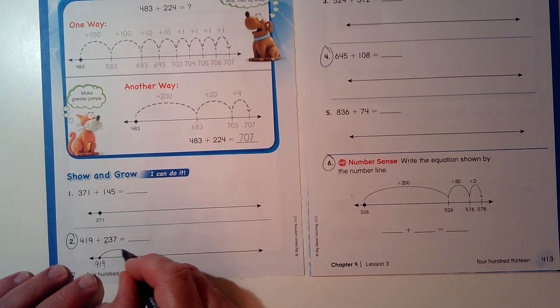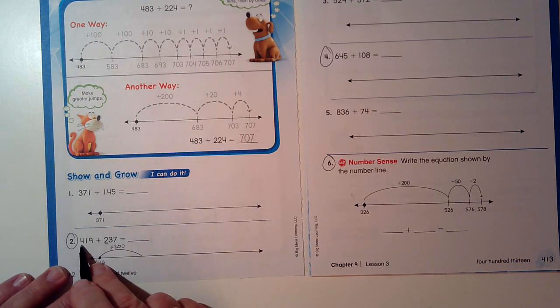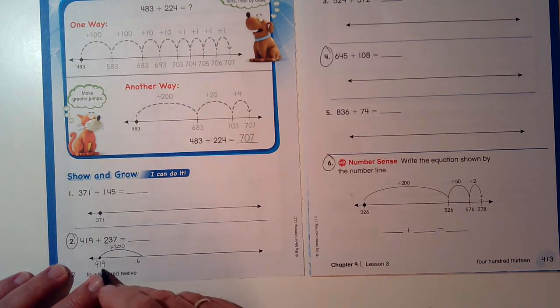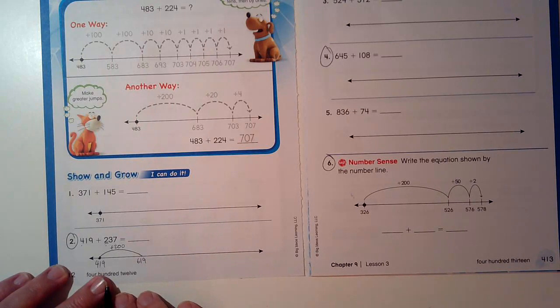Let's add 200 all at the same time. 400 plus 200 is 600, but I didn't change the tens or the ones.